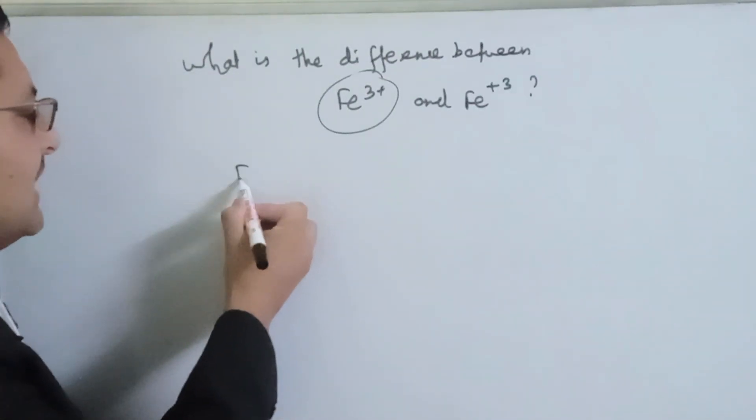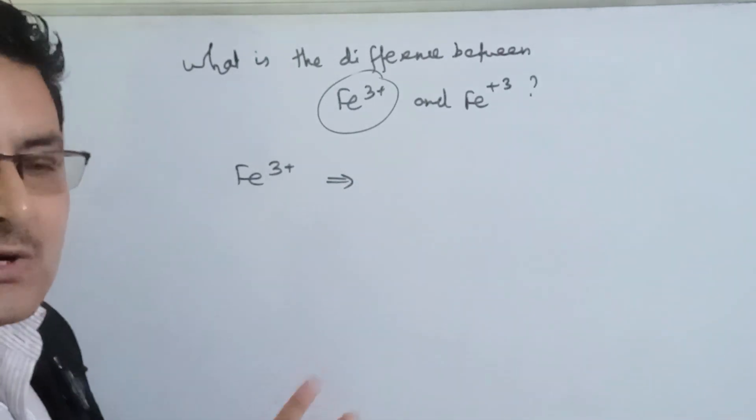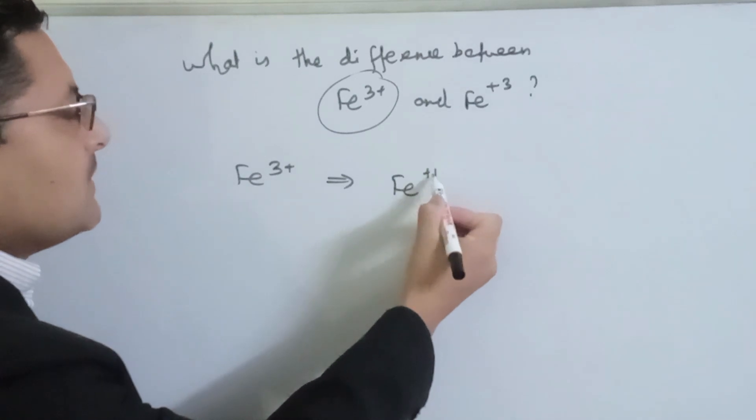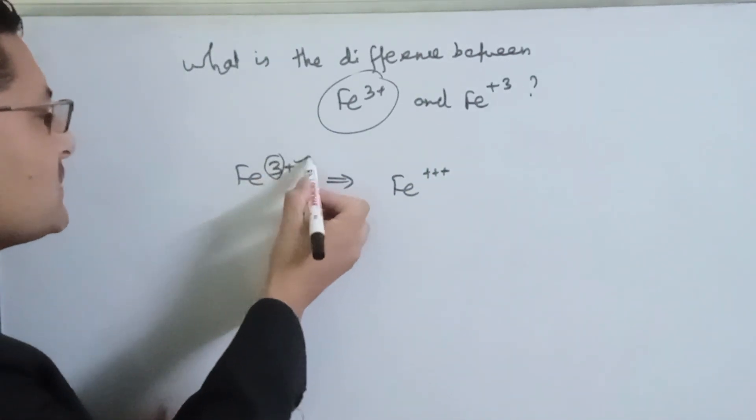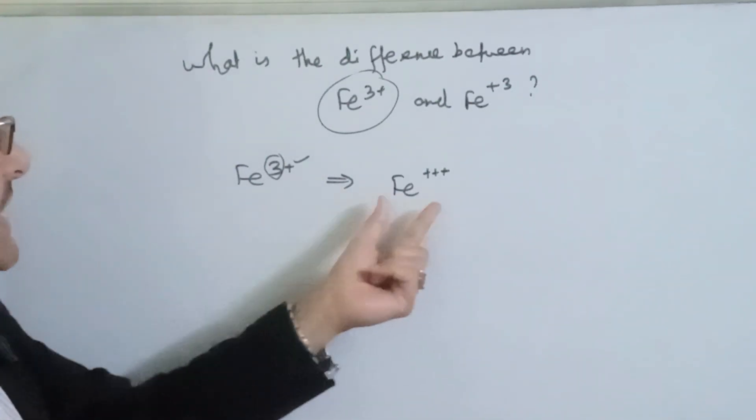So let's see how we can understand Fe³⁺ and Fe²⁺. First, when we write Fe³⁺, it means we can write this ion with 3 positive charge.